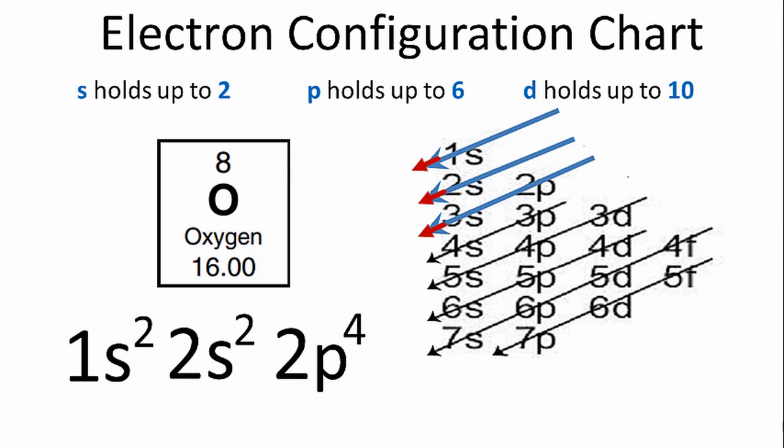So that's the electron configuration for oxygen. And if you add those numbers up, 2 plus 2 plus 4, you'll get 8, which is the number of electrons for oxygen.